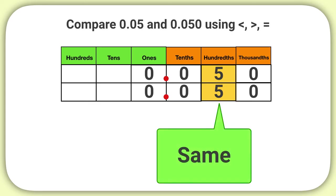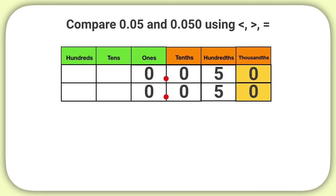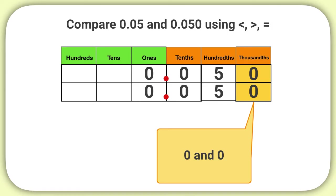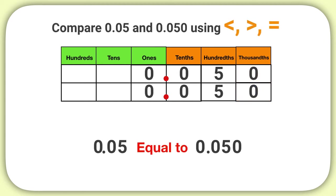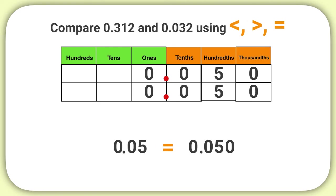I will need to compare the next place value. I remember I added a placeholder 0 to my first number. It's important to note that a placeholder 0 at the end of a decimal does not change its value. Comparing the digits in the thousandths place, they are both 0. That means that 5 hundredths and 50 thousandths are equal in value. The equal sign symbol goes between these numbers to show how they compare.